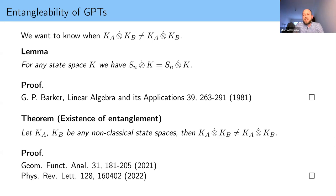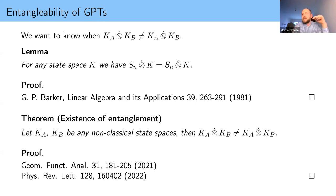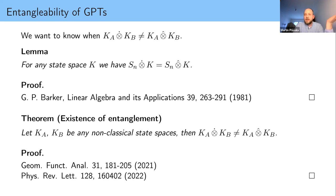The key insight was that instead of caring about two cones, you just need to show each cone individually has a certain property, cutting the problem in half. This property we called generalized superposition: there are two pairs of states such that measurements can perfectly distinguish each pair, but mixtures of the two pairs yield the same state — like |0⟩, |1⟩, |+⟩, |−⟩ in quantum theory. Zero and one can be distinguished, plus and minus can be distinguished, but the lines connecting these pairs overlap. This structure gives entanglement in quantum theory, and we showed it gives entanglement in any non-classical theory.